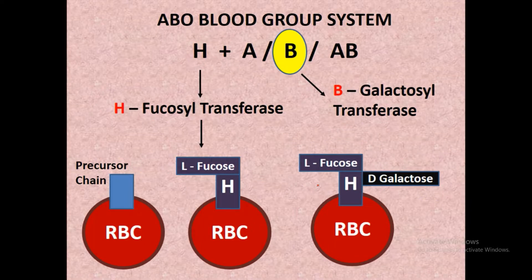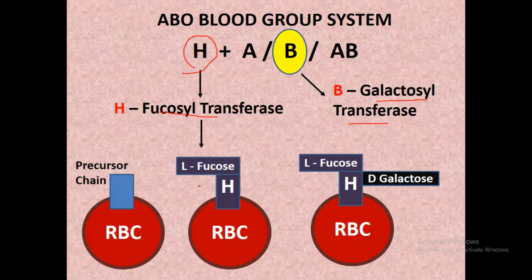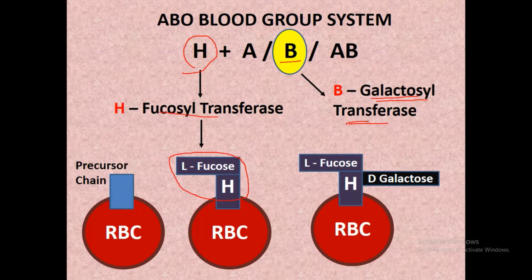The person who has gene B, which is responsible for galactosyltransferase enzyme — as stated earlier, the H gene encoding Fucosyltransferase must first transfer L-fucose to the precursor chain, forming H substance, which is required for antigen B synthesis. The gene B encodes galactosyltransferase, which transfers D-galactose to this H substance. So D-galactose plus L-fucose plus precursor chain collectively form antigen B.